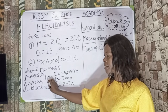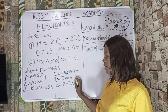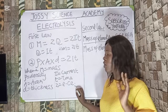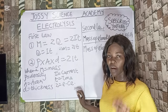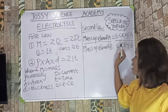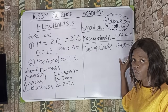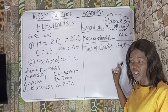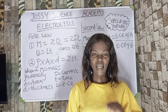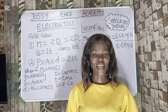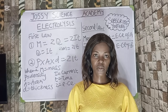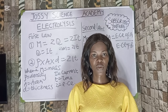Key electrolysis parameters: M is mass, ρ is density, A is area, d is thickness, I is current, t is time, and Z is the electrochemical equivalent. From the second law: mass of element A over mass of element B equals the electrochemical equivalent of A over the electrochemical equivalent of B. If you memorize all these formulas, you are comfortably going to score 90 and above. Please subscribe, turn on notifications, and share this video so other students preparing for the exam can benefit.